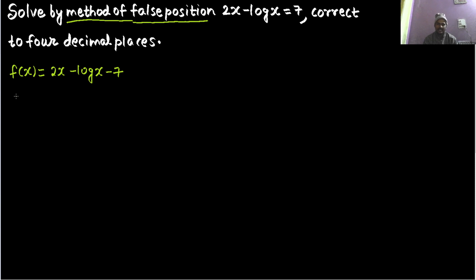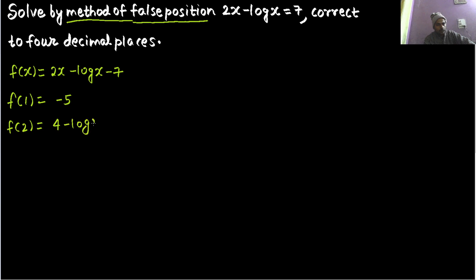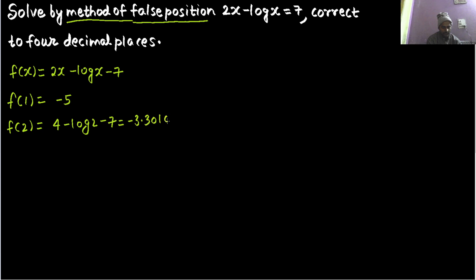Obviously we cannot take 0 because log 0 is not defined. So let us start with 1. f(1) = 2 and log 1 is 0, so 2 minus 7 gives minus 5. f(2) = 4 minus log 2 minus 7, which gives minus 3.301030.